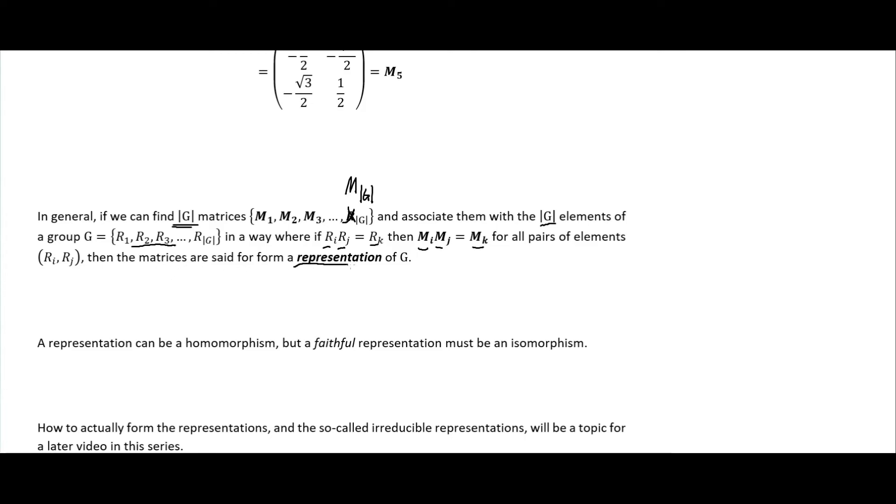If we want a representation to be faithful, then it needs to be an isomorphism, because we can make homomorphic representations, but those will have fewer elements than our group. If we want a faithful representation, it has to be an isomorphism, which means one-to-one, meaning there would be just as many matrices as there are elements in our group.